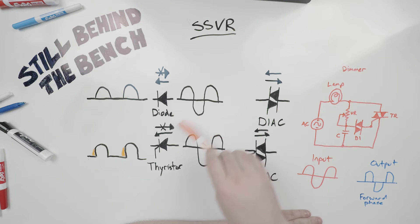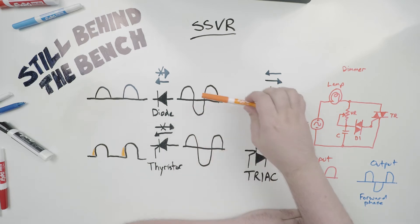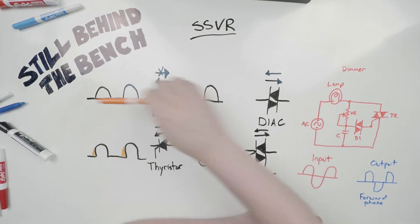First we're going to be talking about a few other discrete components and how the TRIAC came to be. So we have our diode. It is one of the simplest semiconductors. Think of it as a one-way valve. It only lets power flow one way through it.